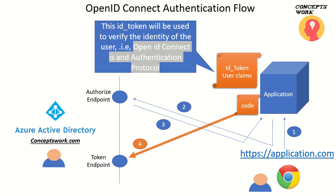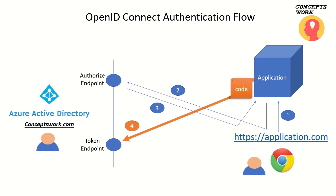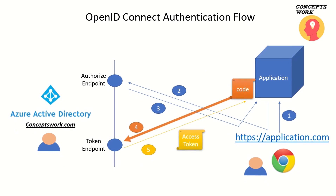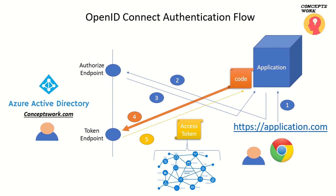The next step for your application to access a protected API is to send the code to the token endpoint. Once this request is processed by Azure AD, an access token will be sent back to the application, which will be used to access a protected API — Microsoft Graph in our case. The only difference between OAuth 2.0 authorization code flow and OpenID Connect is that an ID token is also issued by Azure AD and verified by your application.